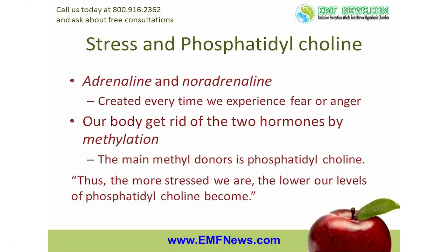Adrenaline and noradrenaline are two other examples. These two hormones are created every time we experience fear or anger. While they are useful in emergencies, if they stay in the body for more than a short time, they can cause terrible damage. Methylation is the pathway the body uses to get rid of both adrenaline and noradrenaline, and one of the main methyl donors for the methylation pathway is phosphatidylcholine. Thus, the more stressed we are, the lower our levels of phosphatidylcholine become. These are just two examples of how toxins, both internal and external, can cause us to become chronically deficient in glycine, taurine, and phosphatidylcholine.